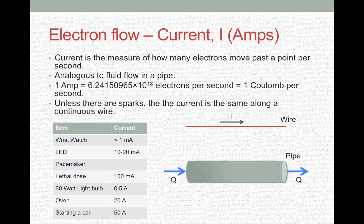Current is electron flow. It's the measure of how many electrons are moving past a point per second. We can think about this kind of like fluid flow in a pipe. And just for reference, one amp, which is the measurement of current, is equal to 6.24 times 10 to the 18th electrons per second or one coulomb per second. And unless there are sparks, the current is the same along a continuous wire. That means that I can pick a point A anywhere along the wire and a point B anywhere along the wire, and the current at A is equal to the current at B if it's the same wire. It's the same thing with a flow in a pipe. Flow at point A is equal to flow at point B.